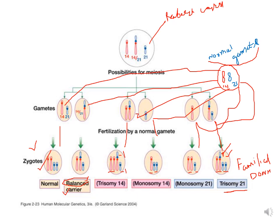Let us try to understand this picture. This person is suffering from familial Down syndrome. The red chromosomes show one homologous pair of chromosome 14, on which the long arm of chromosome 21 has translocated. The other 21st chromosome is alone — it is not a bivalent because the other chromosome has translocated onto the 14th chromosome. This cell is representing a Robertsonian translocation carrier. After meiosis, there are three possibilities for how the gametes are formed.